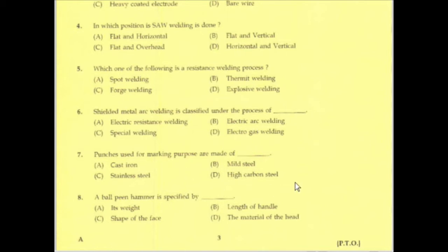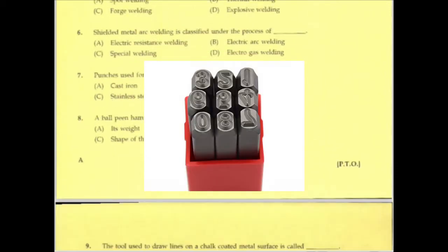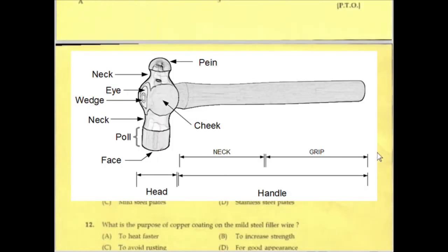Punches used for marking purpose are made of high carbon steel. A ball pin hammer is specified by its weight.